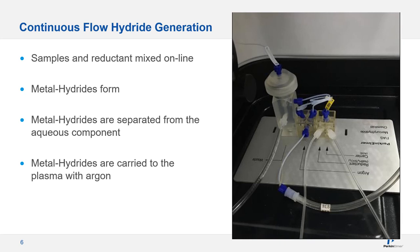Here's what the hydride formation system looks like in our instrument. The two lines on the right are where the reductant and sample come in and mix in the first mixing block. The hydride gas forms, and the nebulizer argon gas carries the hydride into the gas-liquid separator. The liquid is pumped out the bottom to drain while the hydride is carried to the plasma.